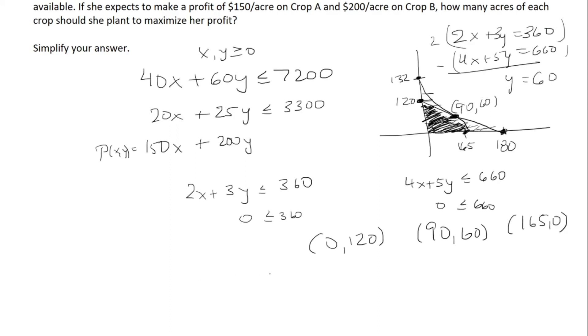We're going to plug them into the profit equation, which is 150x plus 200y. If I plug in x equals 0, y equals 120, I end up with 24,000. If I let x be 90 and 60 be y, I end up with 25,500. And if I let x equal 165, y equals 0, I end up with 24,750.